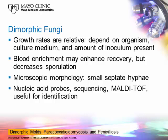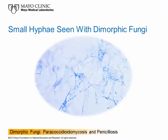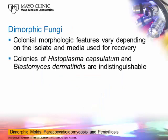We have nucleic acid probes, nucleic acid sequencing, and now MALDI-TOF to help identify these organisms so that we don't have to rely solely on traditional microscopic morphologic features. But for many of us, that's still the way we identify them, and it probably will be for many years. This image shows the small hyphae seen with dimorphic fungi — they are septate, though the septations are difficult to see. Colony morphologic features vary depending on the isolate and the medium; colonies of Histoplasma and Blastomyces are pretty much indistinguishable from each other.